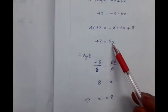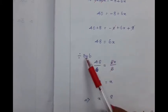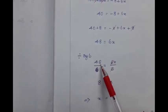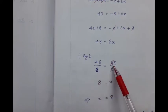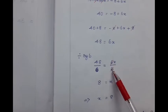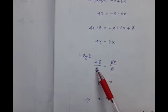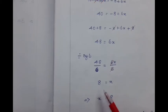For finding the value of x, we need to divide by 6 on both the sides. Dividing by 6 on both the sides, we get 48 by 6 which is equal to 6x by 6. On the right hand side, 6 in the numerator and denominator is getting cancelled. So we get x. On the left hand side, dividing 48 by 6, we get 8, which implies that x is equal to 8, which is the required answer.